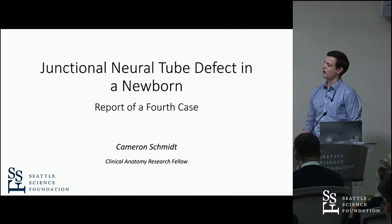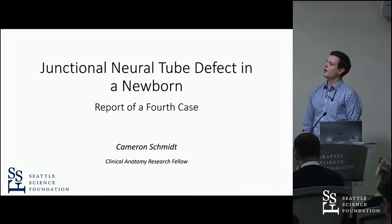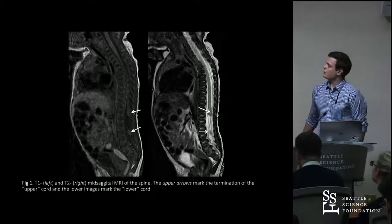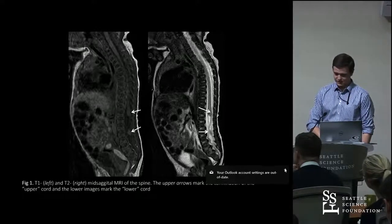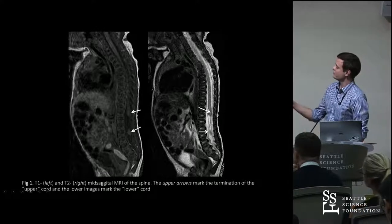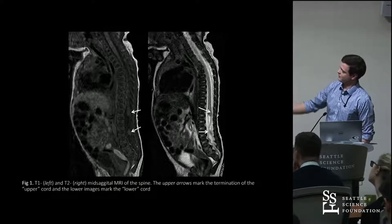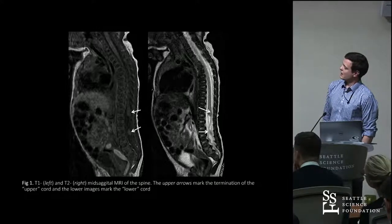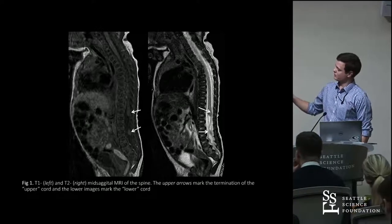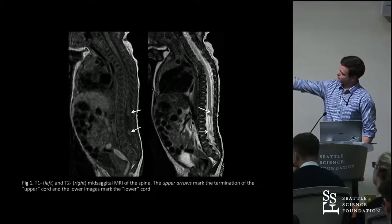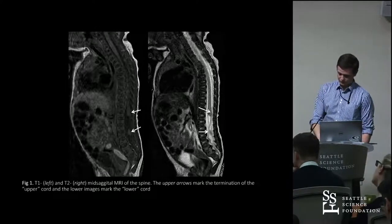In the process of prepping the child to go in for surgical correction of the anorectal atresia, an MRI was taken, which revealed a discontinuous spinal cord, as you can see on both the left and right. That's around the thoracolumbar junction. You can see on the top there's a drumstick-like appearance, and then there are these two cords that seem to connect to this lower conus medullaris, which is visible there.